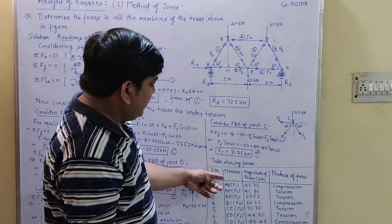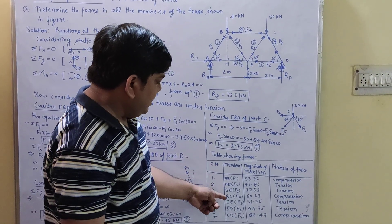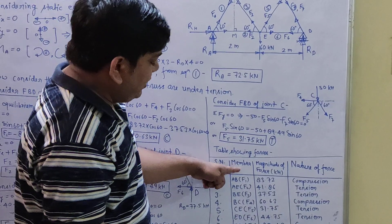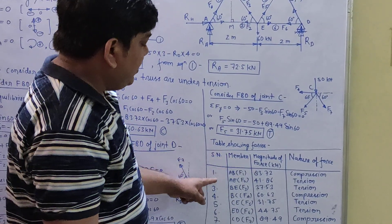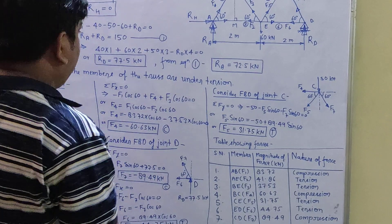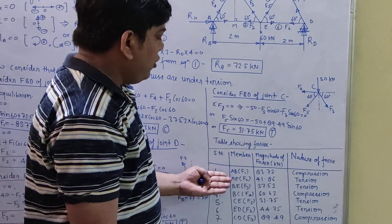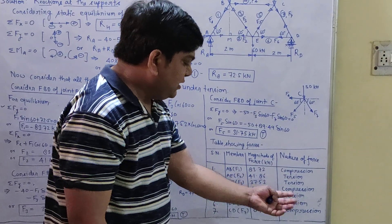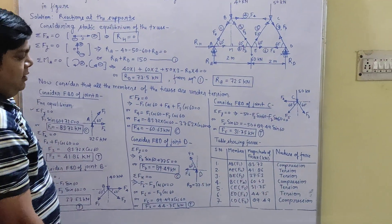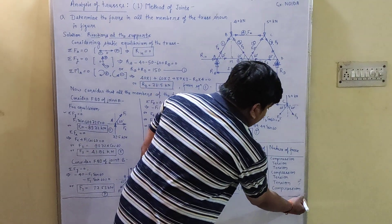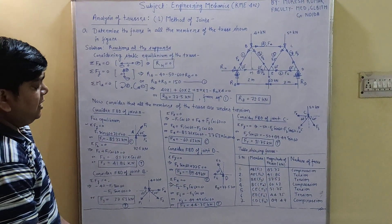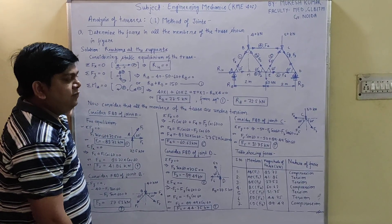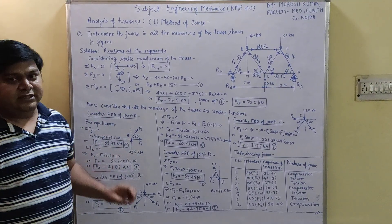The truss has 7 members: AB, AE, BE, BC, CE, ED, and CD. Write down the forces and magnitudes already solved, along with the nature of each force: compression, tension, compression, tension, tension, and compression respectively. Once you have completed this table, this is the final solution of the problem. We will continue with the next problem in the next lecture.